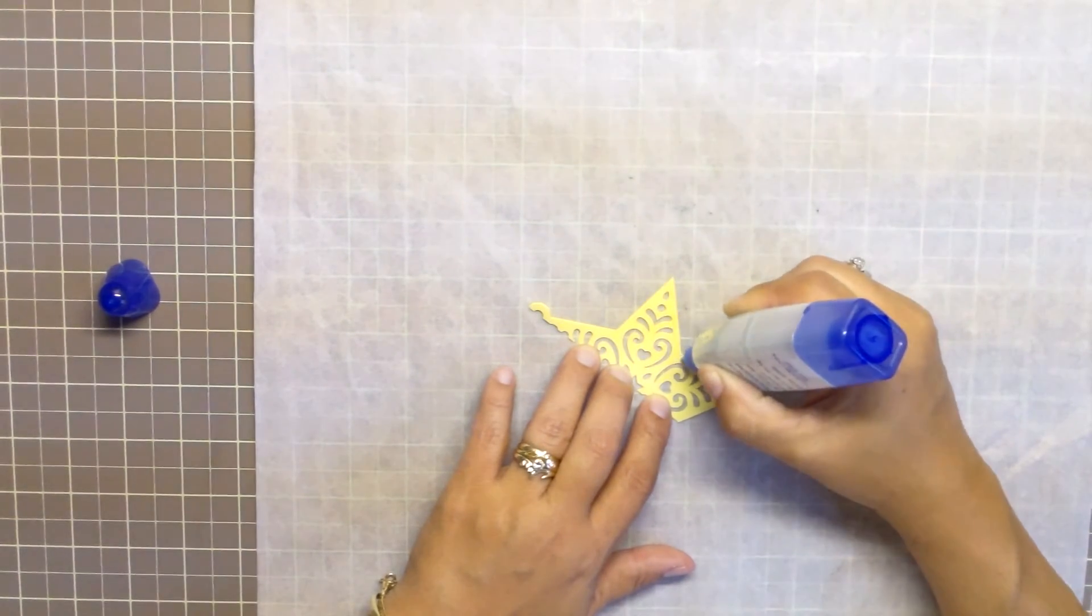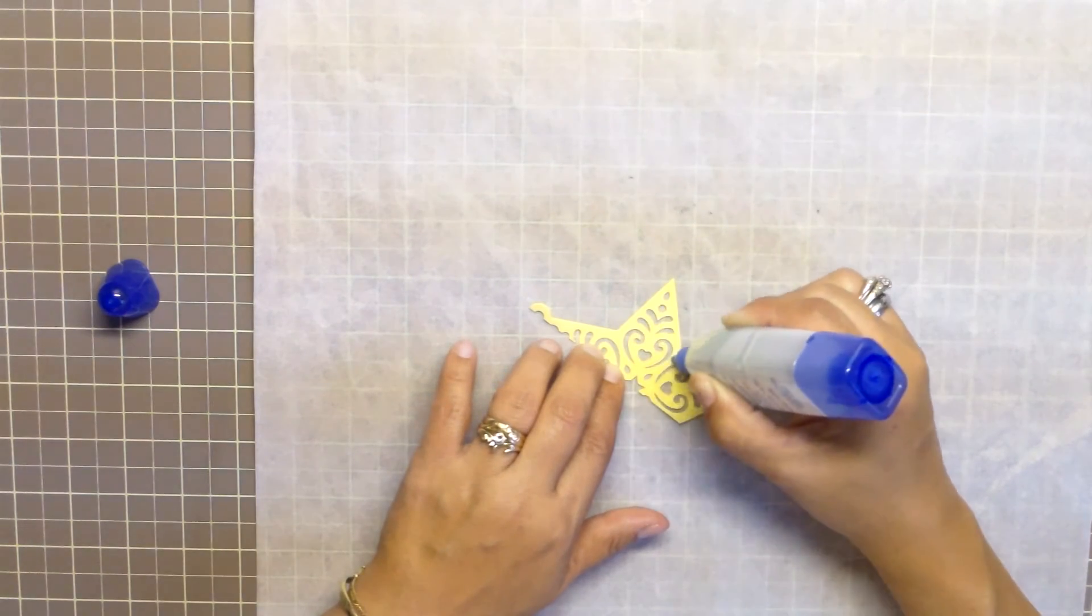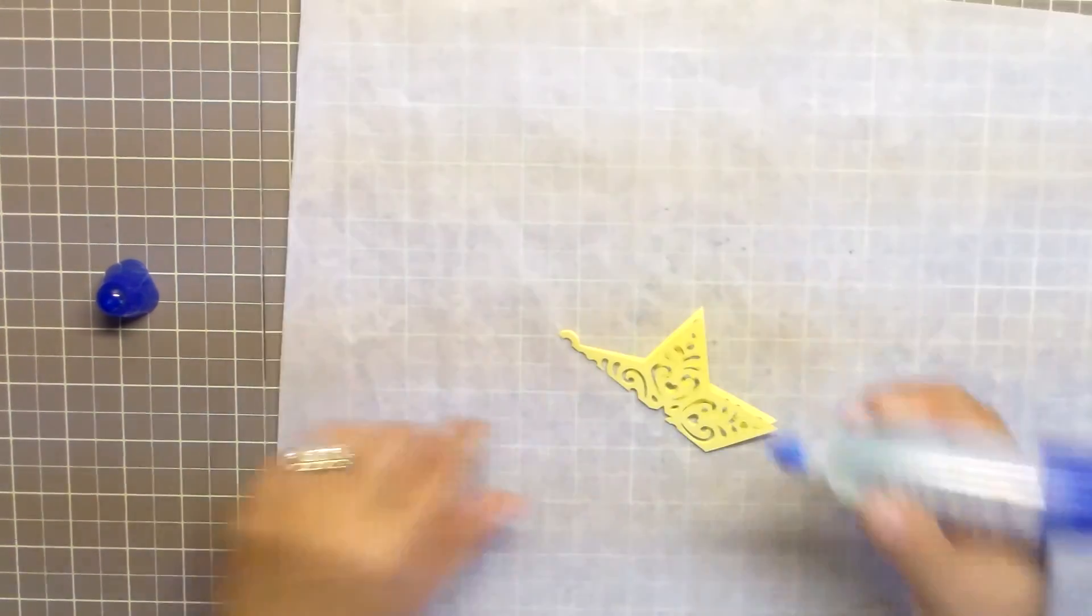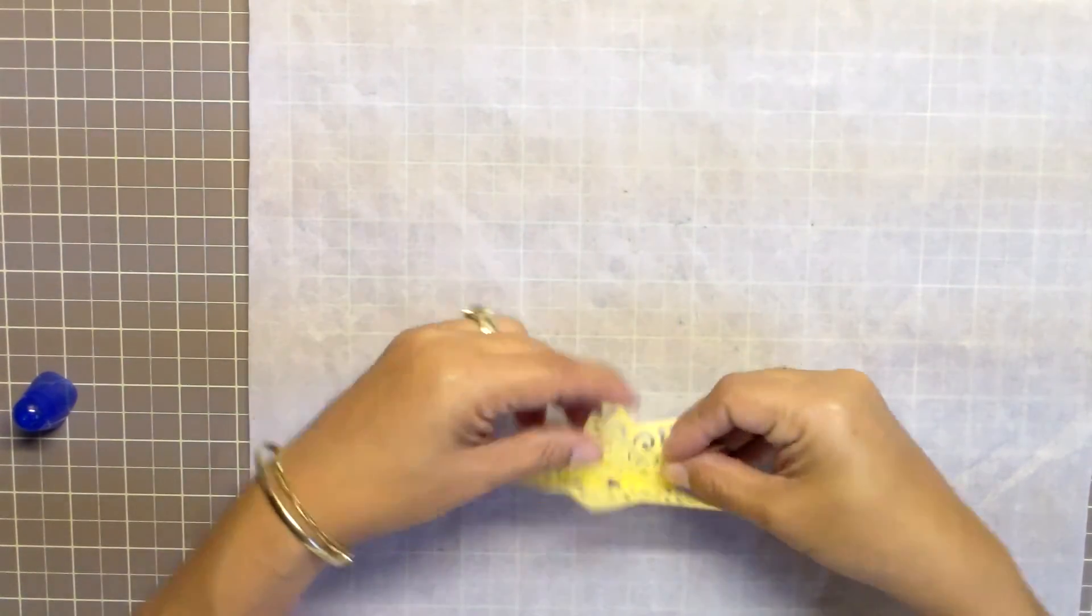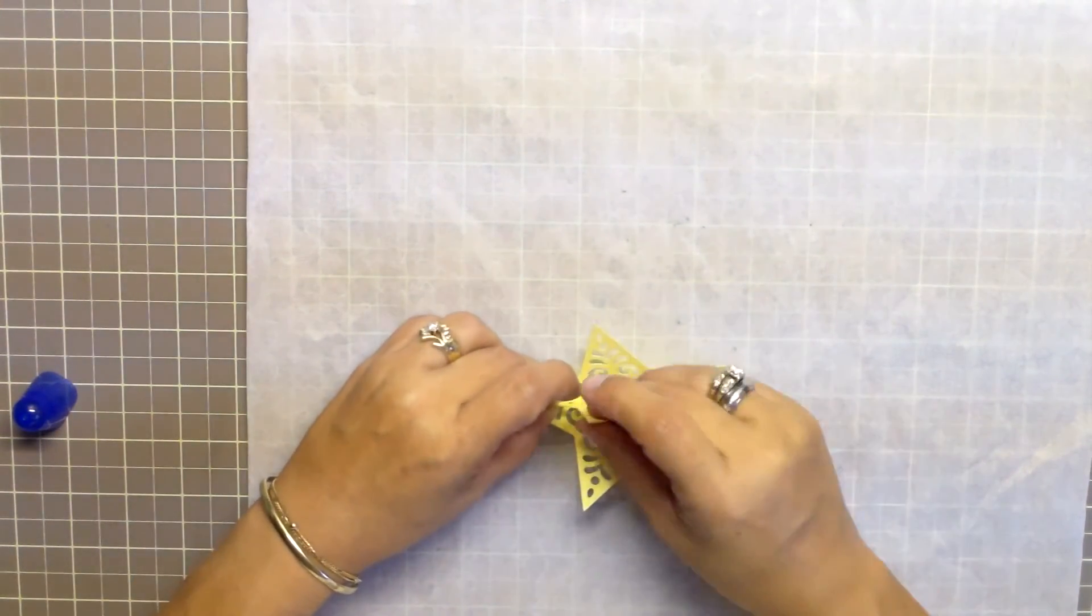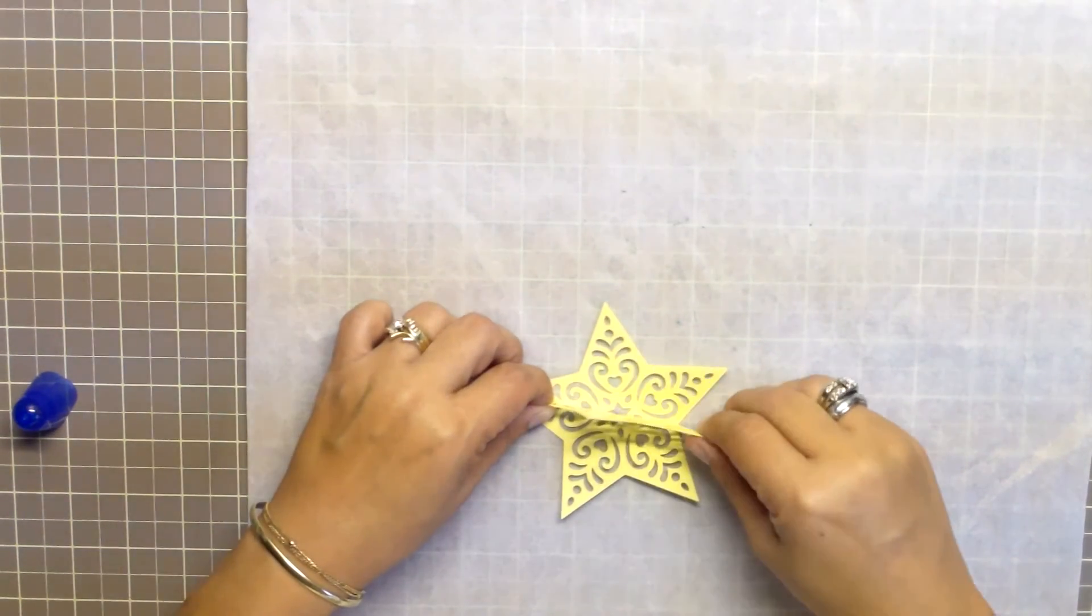Now that all my stars have a sharp fold down the middle I can use my liquid glue on all the edges and as close to the center of the star as possible. As I attach the stars together I want to make sure that the edges and the center of the stars are adhering together.